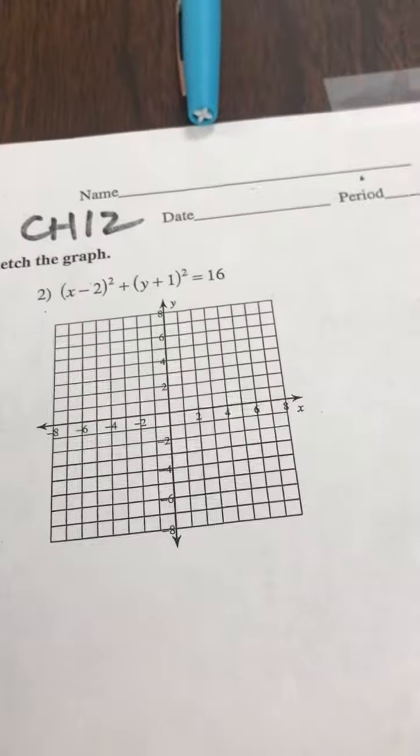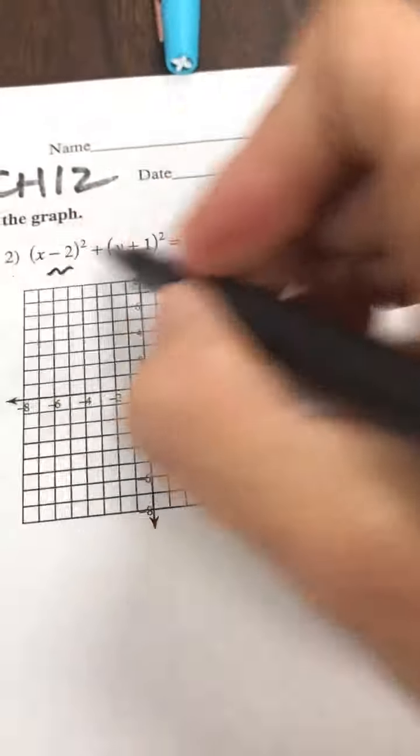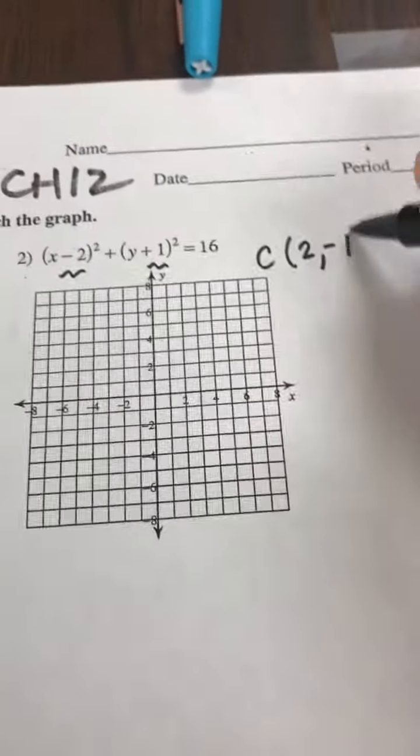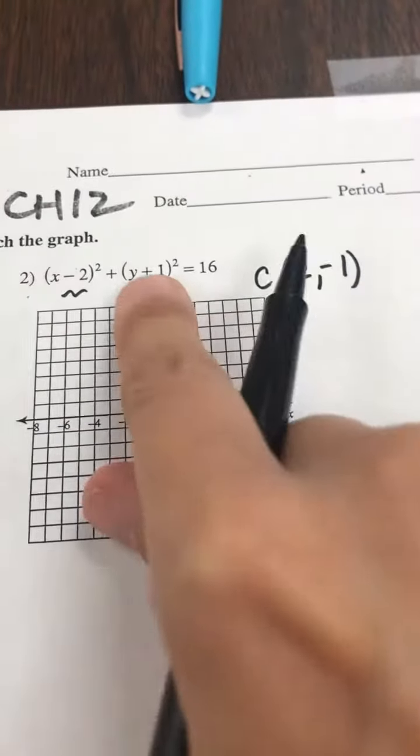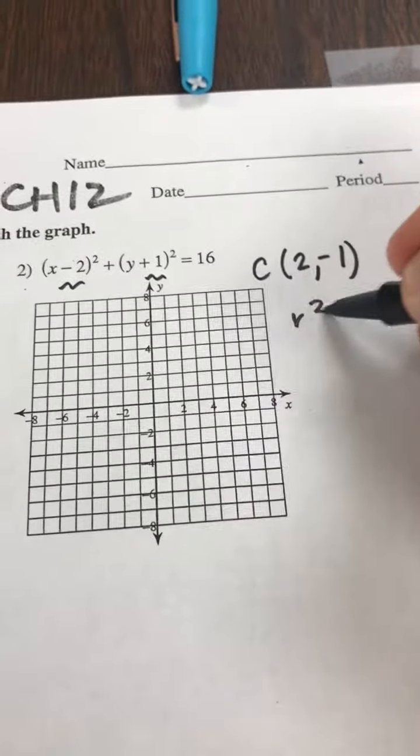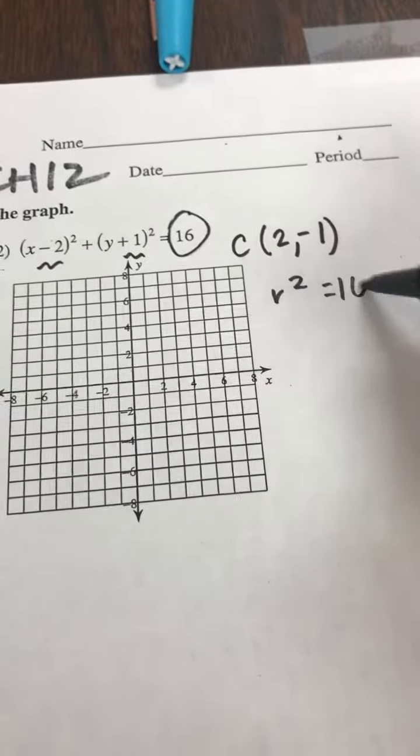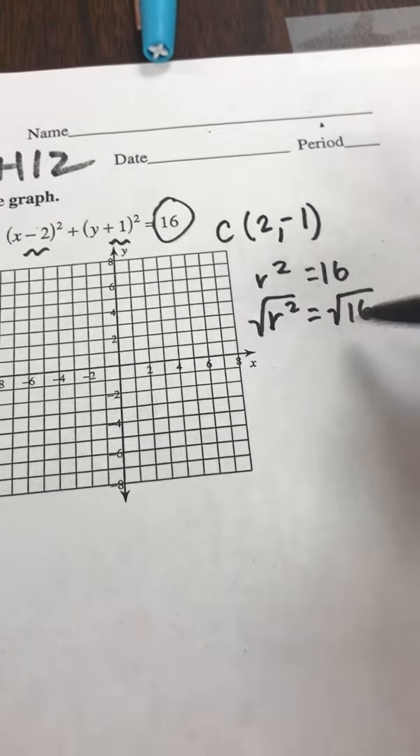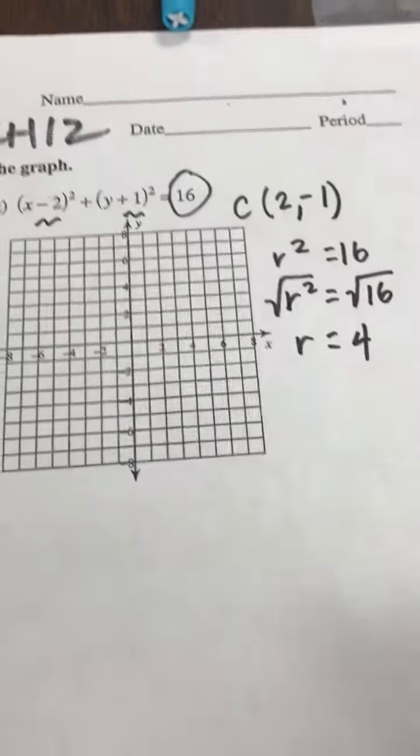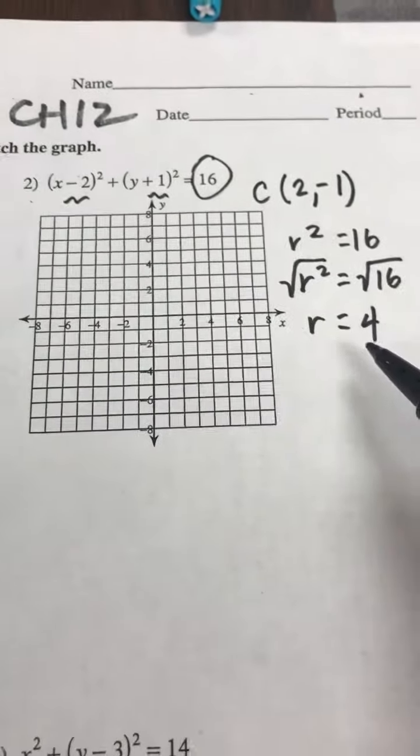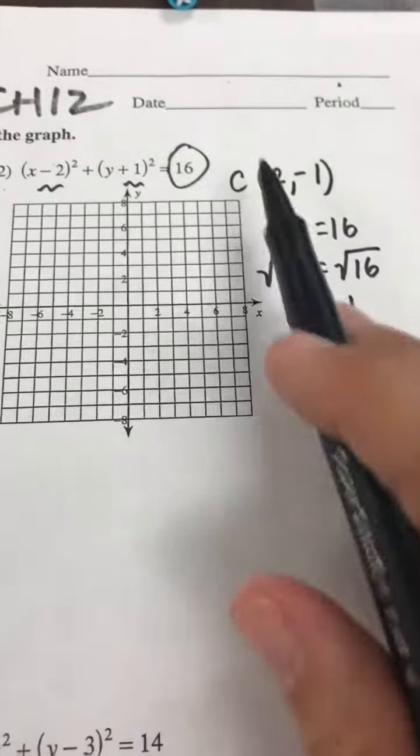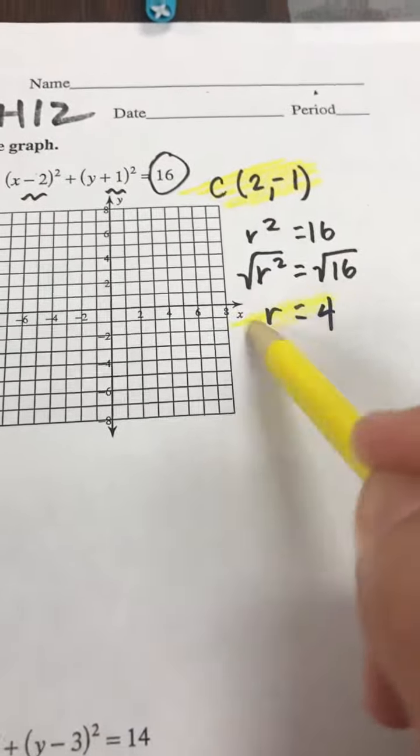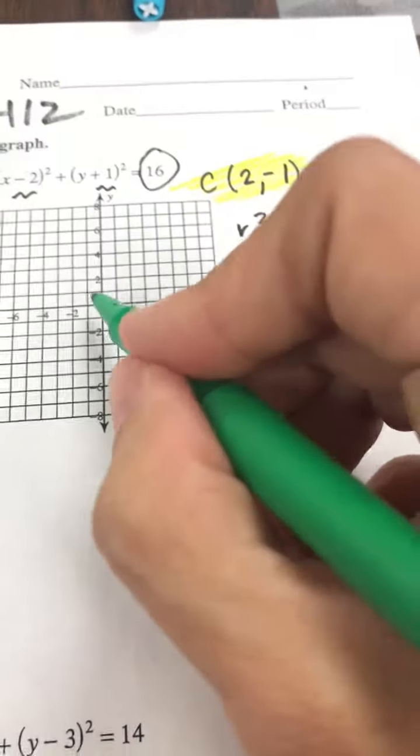Next problem. If this is my equation, and I type that in Desmos, the center would be graphed at 2, negative 1, noticing this relationship. And our radius squared here is 16. That would give us the radius as the square root of 16, also known as the number 4. So this is enough information to graph. If the center is here and the radius is there, I can graph this picture.